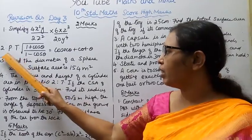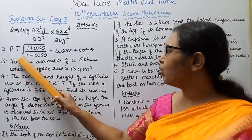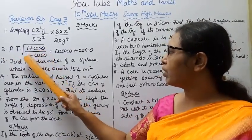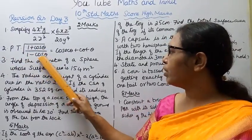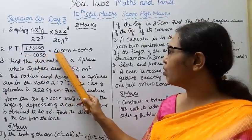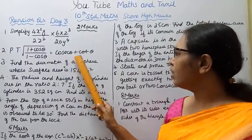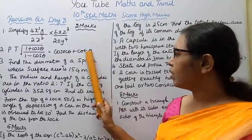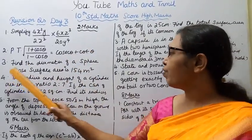Second, prove that: √[(1 + cosθ) / (1 − cosθ)] = cosecθ + cotθ. Third,